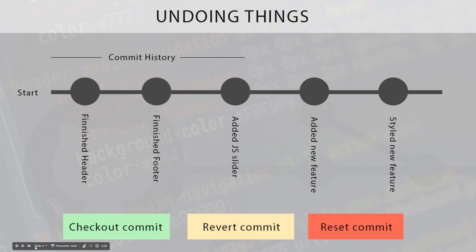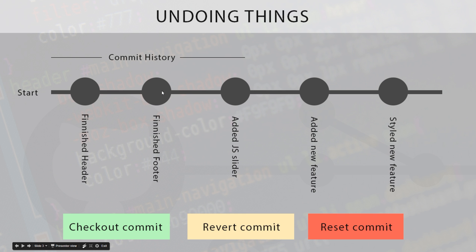So how does checkout commit work? Say your boss wants to go back in time and see what the code was like at a particular commit. You can use a checkout commit to check out that commit, and it's going to show you in your text editor the code at that point in time. Any changes you make while checking out that commit are not going to be saved — it's read only, so you won't destroy or alter the commit history in any way.